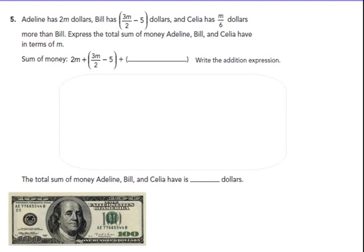Adeline has 2M dollars. Bill has 3M over 2 minus 5 dollars. And Cecilia has M over 6 dollars more than Bill, so Bill's expression is going to be part of Cecilia's. Cecilia has Bill's amount — 3M over 2 minus 5 — plus M over 6 more. The question asks us to express the sum of the money that Adeline, Bill, and Cecilia have in terms of M. So Cecilia's expression is 3M over 2 minus 5 plus M over 6.